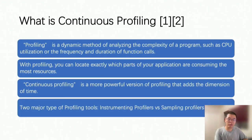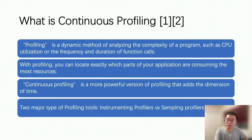What is continuous profiling? Profiling is a dynamic method of analyzing the complexity of a program, such as CPU utilization or the frequency and duration of function calls. With profiling you can locate exactly which parts of an application are consuming the most resources. Continuous profiling is a more powerful version that adds the dimension of time. There are two major types of profiling tools: instrumenting profilers, which insert code into function calls to collect execution details, and sampling profilers, which periodically collect the call stack to represent estimated function call duration.